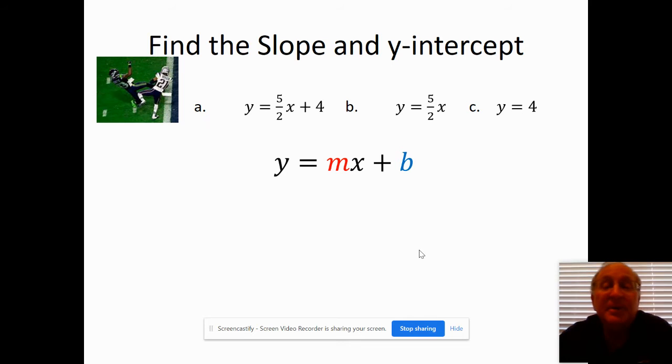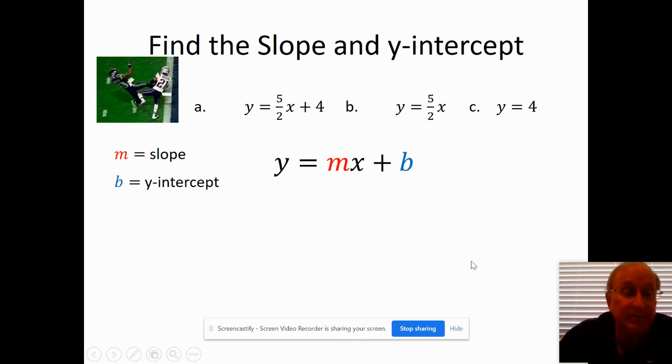Y equals mx plus b. M represents the slope - it's the Latin word for slope, and the y-intercept is denoted by b. M is just another name for slope, and b is the y-intercept. We're going to find the slope and y-intercept from these equations.